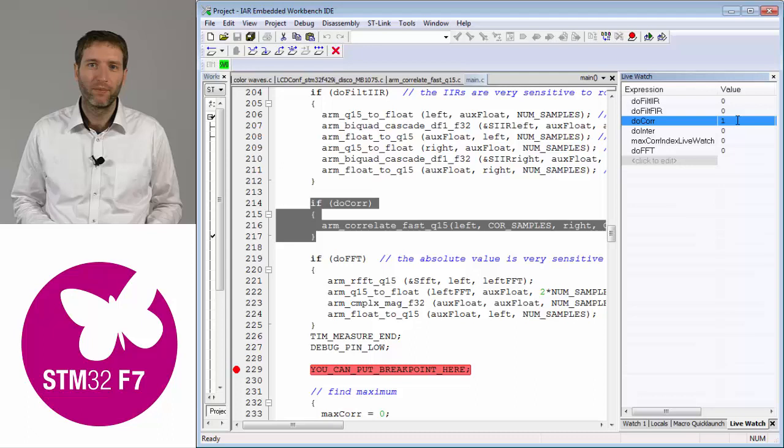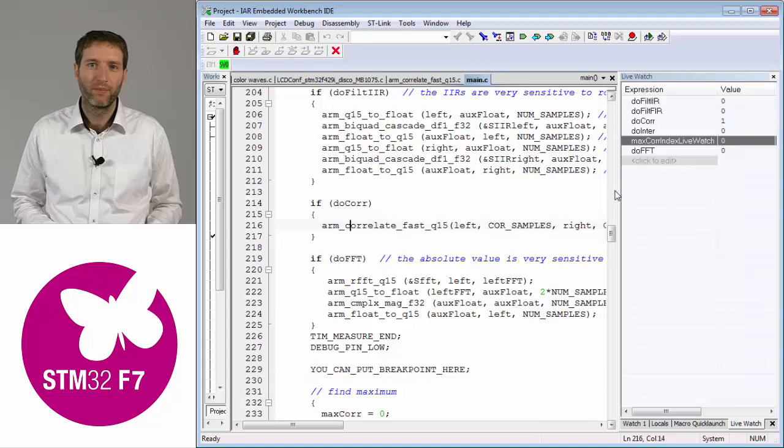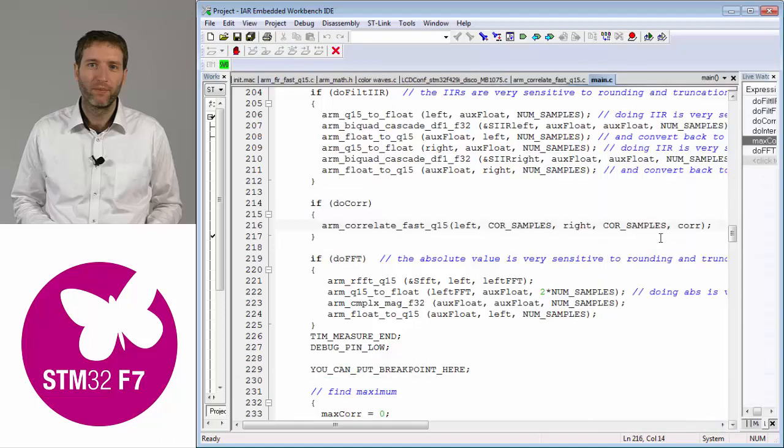If this flag is set, I'm just calling the correlate function. This is the function from the CMSIS library, so running the correlation function, all I need to do is call one function from the library. Particularly easy from a user or programmer perspective. As arguments it takes the left and right arrays, and this is the output.